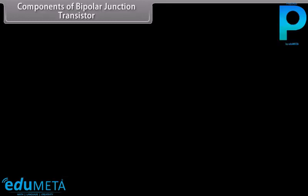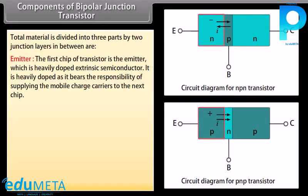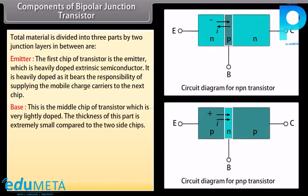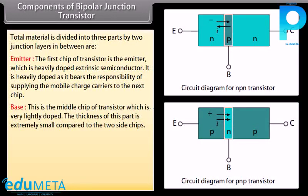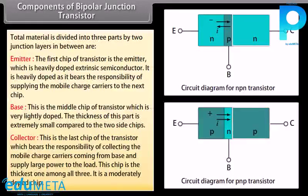The total material of a bipolar junction transistor is divided into three parts by two junction layers. The emitter is the first chip, which is heavily doped extrinsic semiconductor responsible for supplying mobile charge carriers to the next chip. The base is the middle chip, very lightly doped and extremely thin. The collector is the last and thickest chip, moderately doped, responsible for collecting mobile charge carriers from the base and supplying large power to the load.